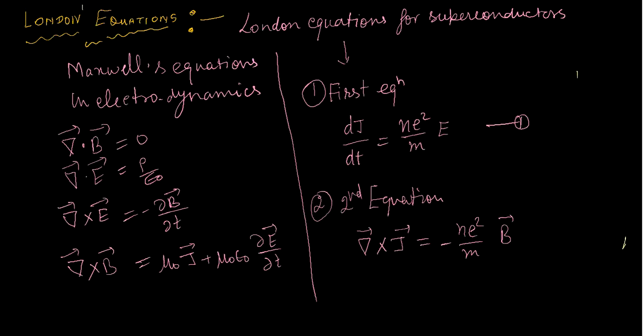I will discuss the London equations. These two equations are additional equations alongside Maxwell's four equations in electrodynamics. In superconductors, London equations play an important role. What is that role and how can one derive these two equations — that I will discuss here.